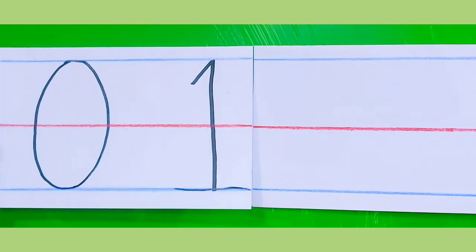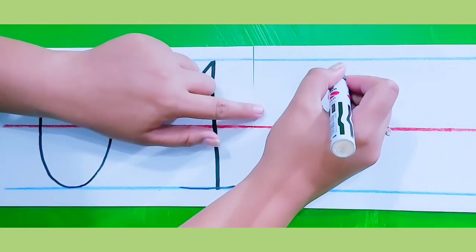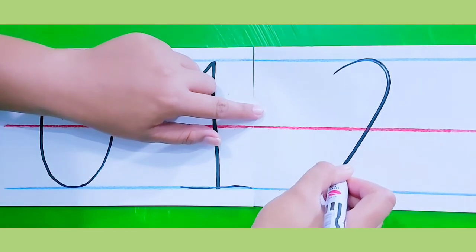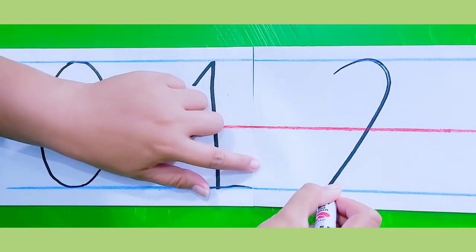For number two, make a curved line going down to the blue line, and left to right.